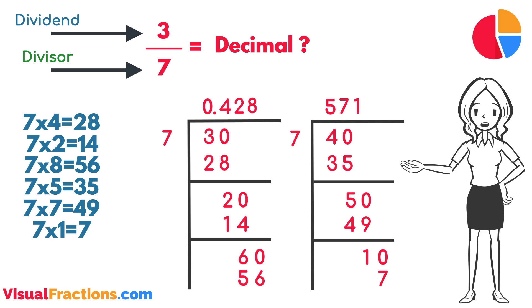So, there we have it. The fraction three-sevenths converted to a decimal is 0.428571, with the sequence 428571 repeating indefinitely.